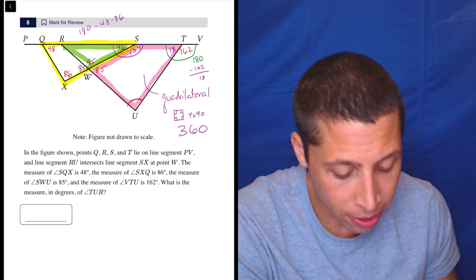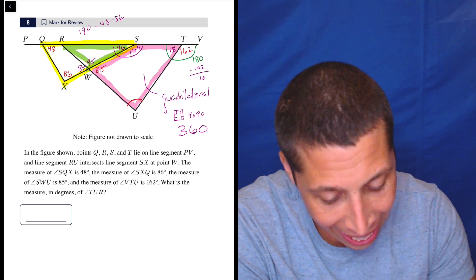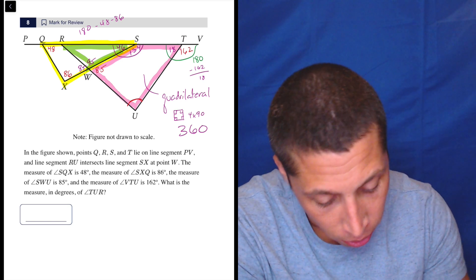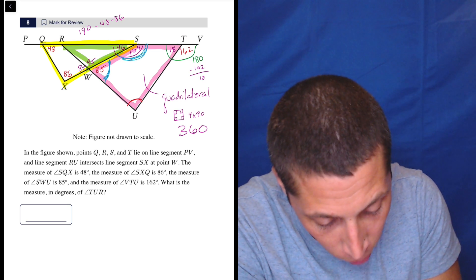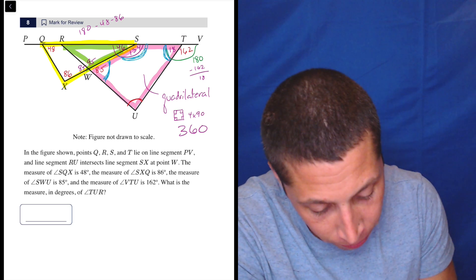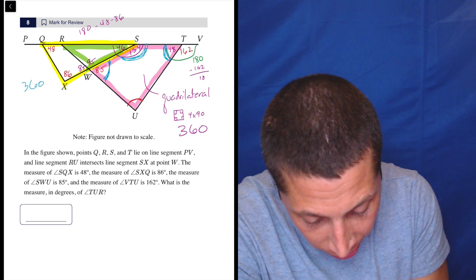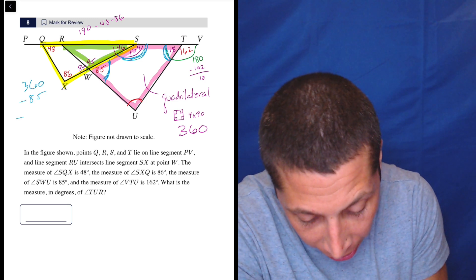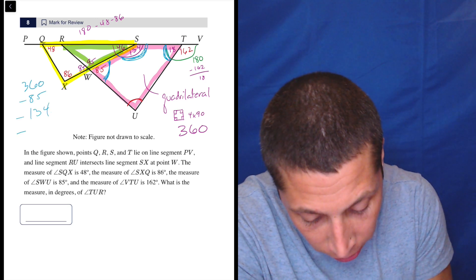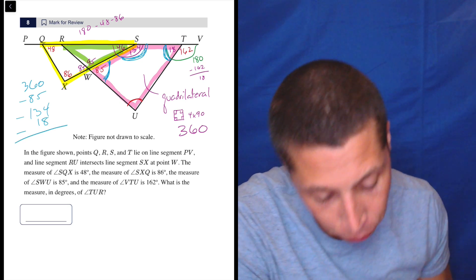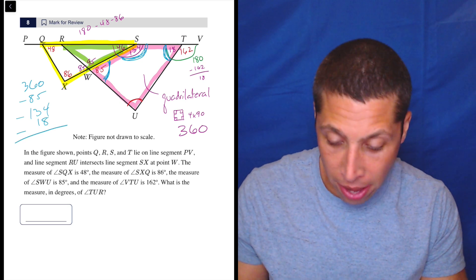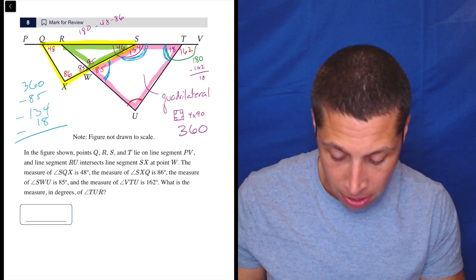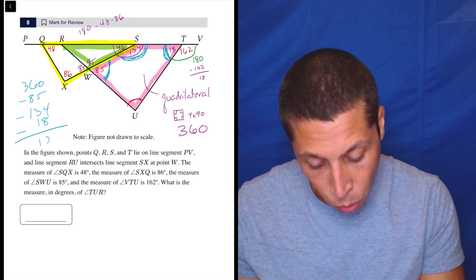So here we can do it because we have four angles, but we have three of them accounted for, right? 85, 134, and 18. So if we take our 360 and we subtract out the 85, the 134, and the 18, we're going to be left with what we want, angle U. So 360 minus 85 minus 134 minus 18 is 123.